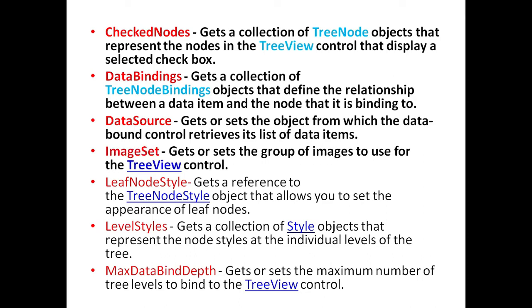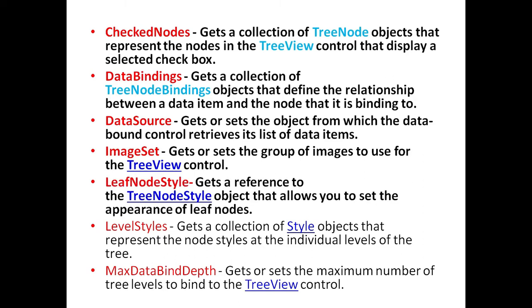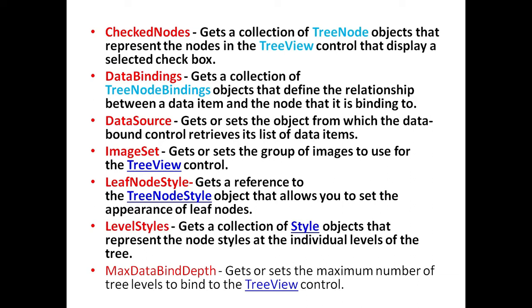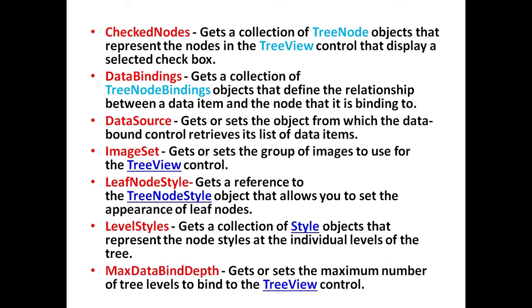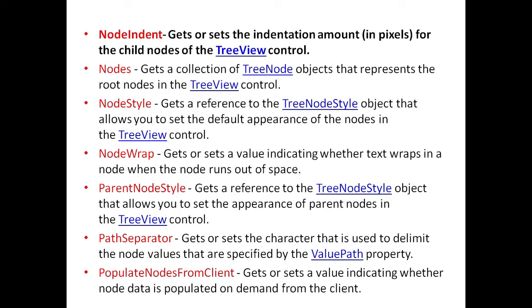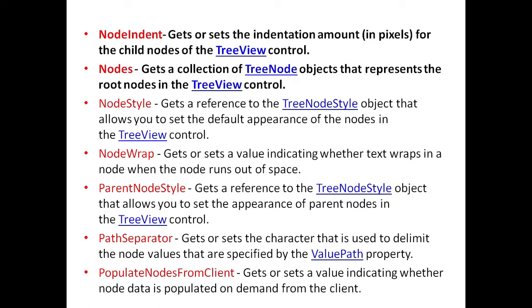ImageSet property is used to get or set the group of images to use for the TreeView control. LeafNodeStyle is used to get a reference to the TreeNodeStyle object that allows the user to set the appearance of the leaf node. LevelStyles is used to get a collection of style objects that represent the node styles at the individual levels of the tree. MaxDataBindDepth is used to get or set the maximum number of tree levels to bind to the TreeView control. NodeIndent is used to get or set the indentation amount in pixels for child nodes in a TreeView control. The Nodes property is used to get a collection of tree node objects that represent the root nodes in the TreeView control.